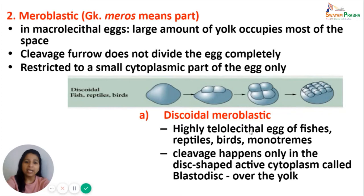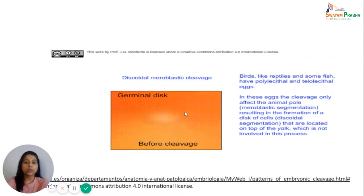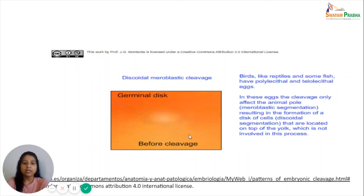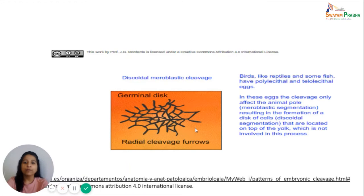In discoidal cleavage, most of the egg cytoplasm is covered with yolk, leaving only a small disc-shaped active cytoplasm at the animal pole. Further cleavages happen only in this disc-like area, accumulating all blastomeres at the animal pole while the yolk-containing cytoplasm remains undivided. Animation shows discoidal meroblastic cleavage as it occurs in highly telolecithal eggs of birds, reptiles, and some fishes, where cleavage happens only in the blastodisc at the animal pole while the rest of the yolk-laden cytoplasm remains unaffected.